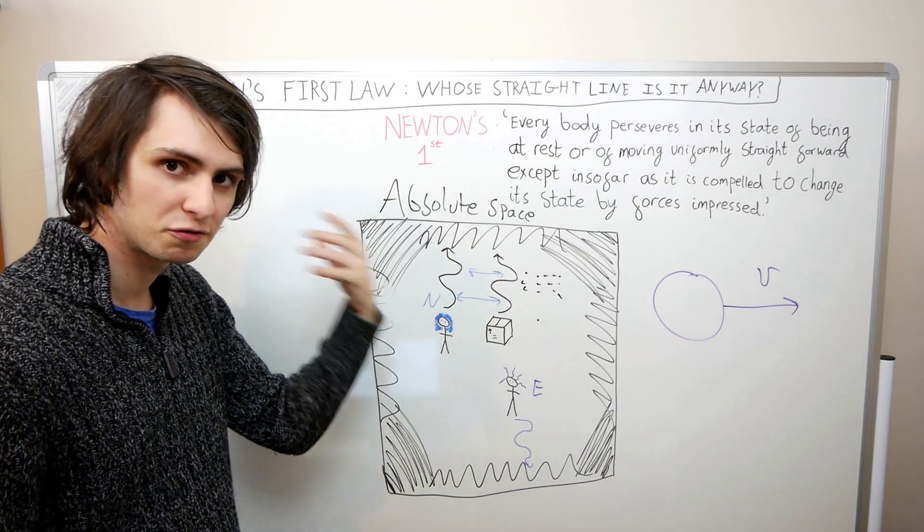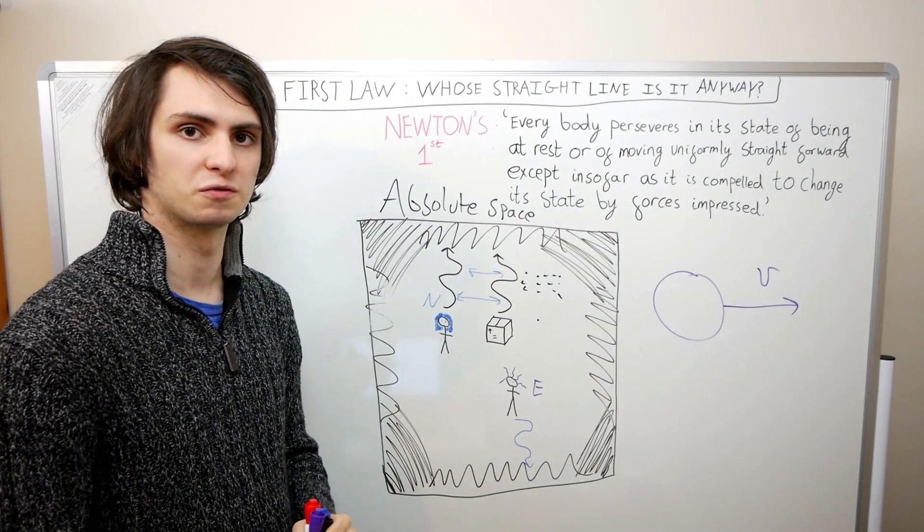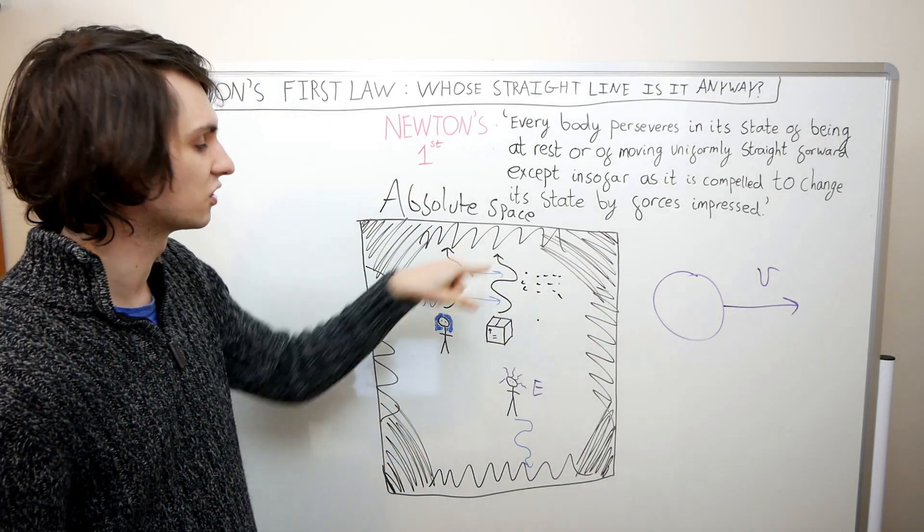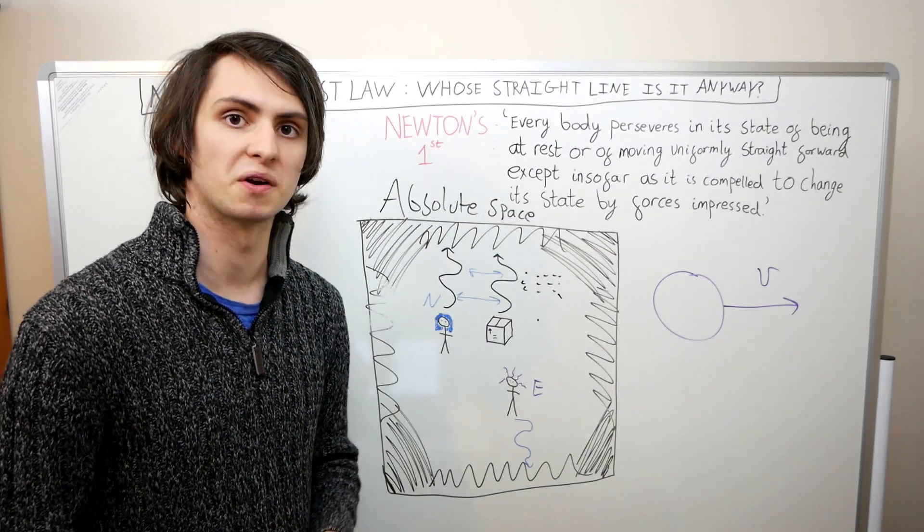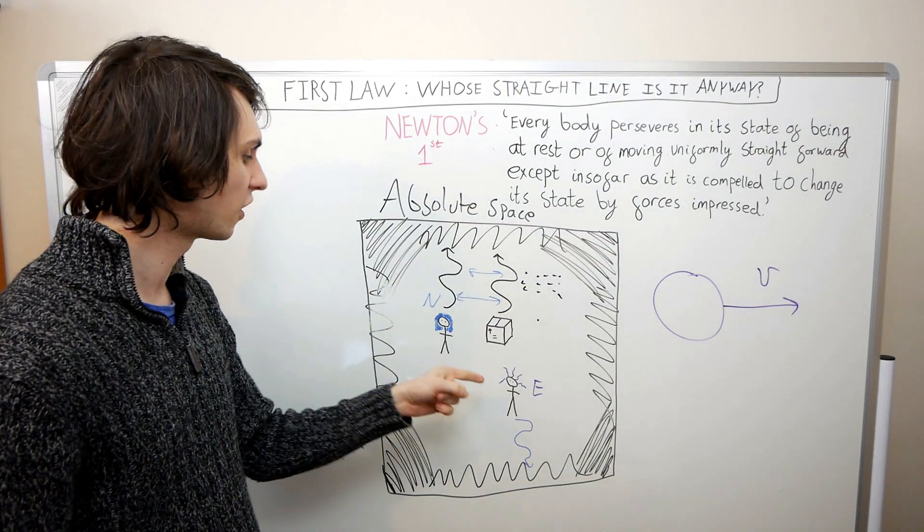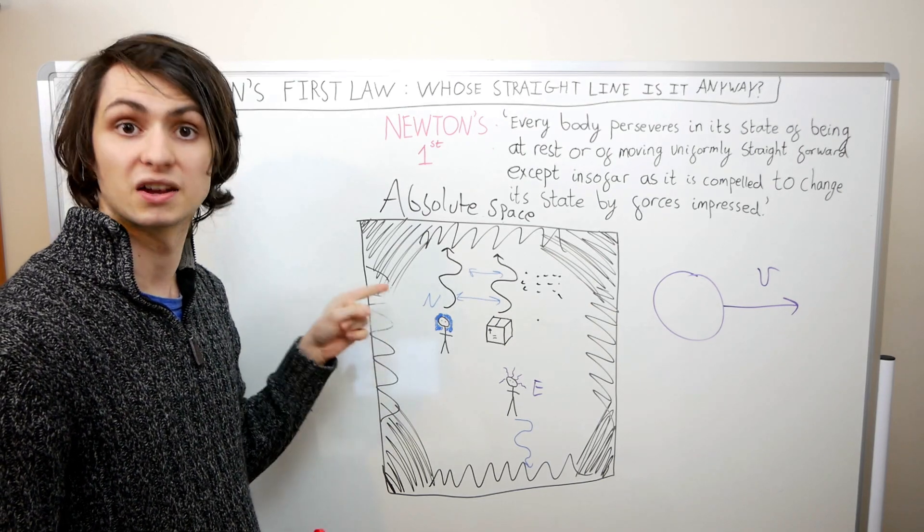The box, however, there's now a fact of the matter over whether it's experiencing a force. Because it's not moving in a straight line relative to the points of absolute space, the box is experiencing a force. Einstein is right, and Newton is wrong, as usual.